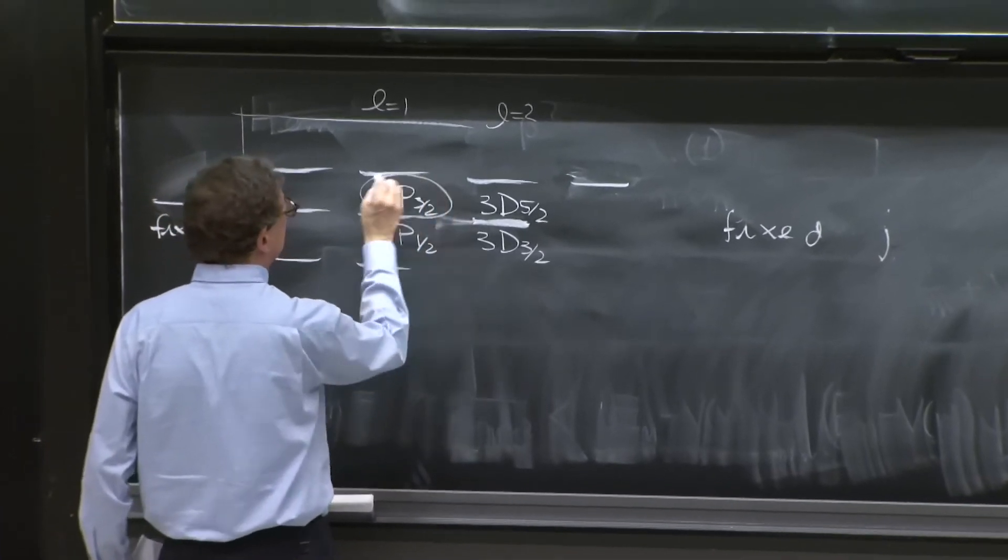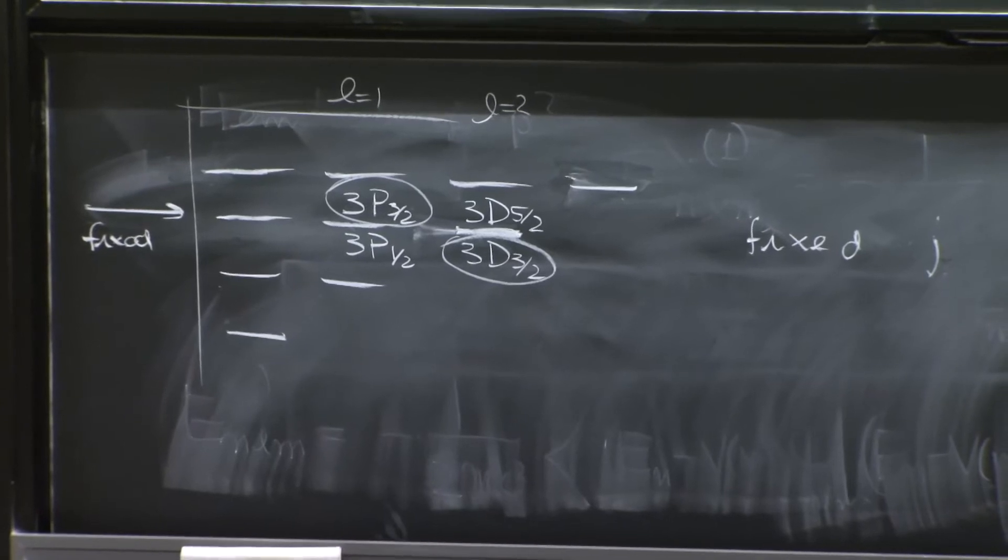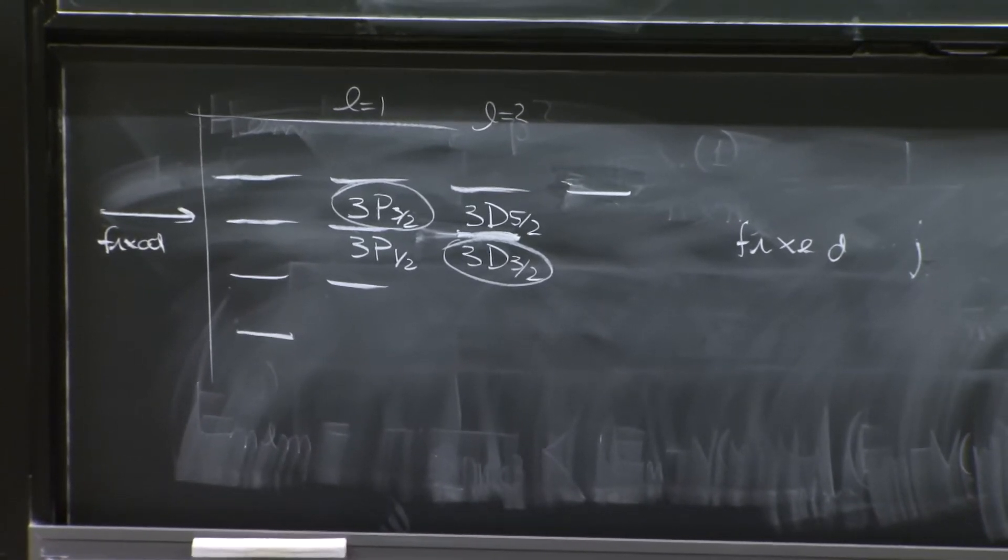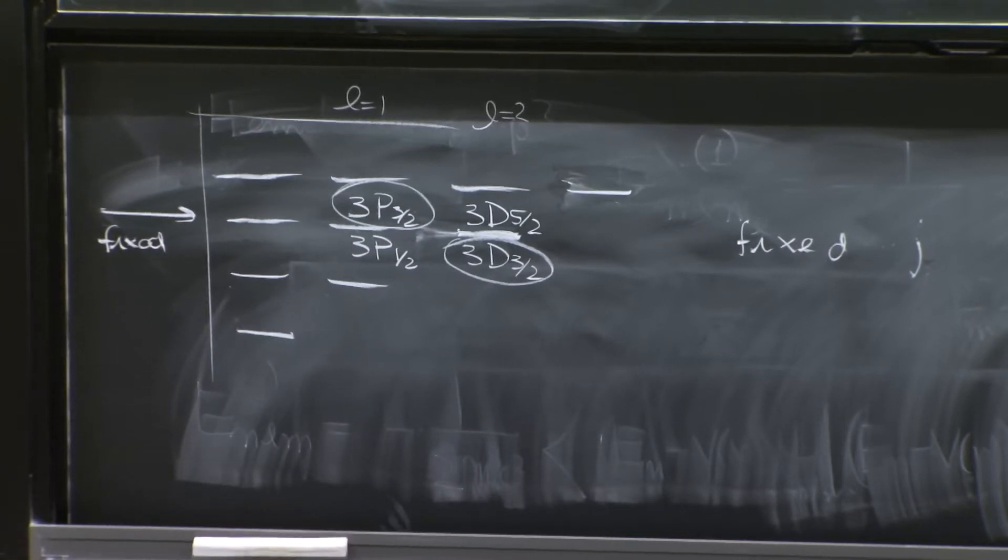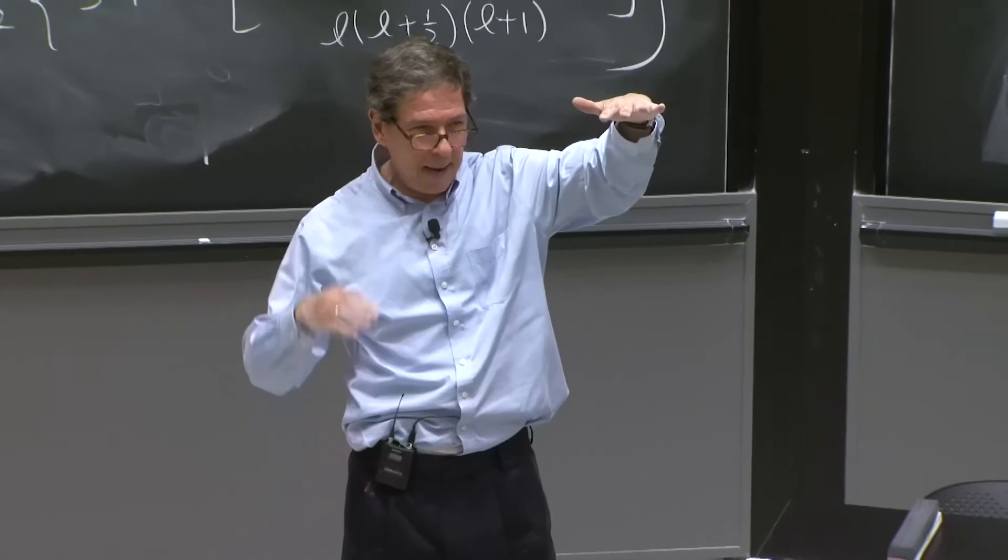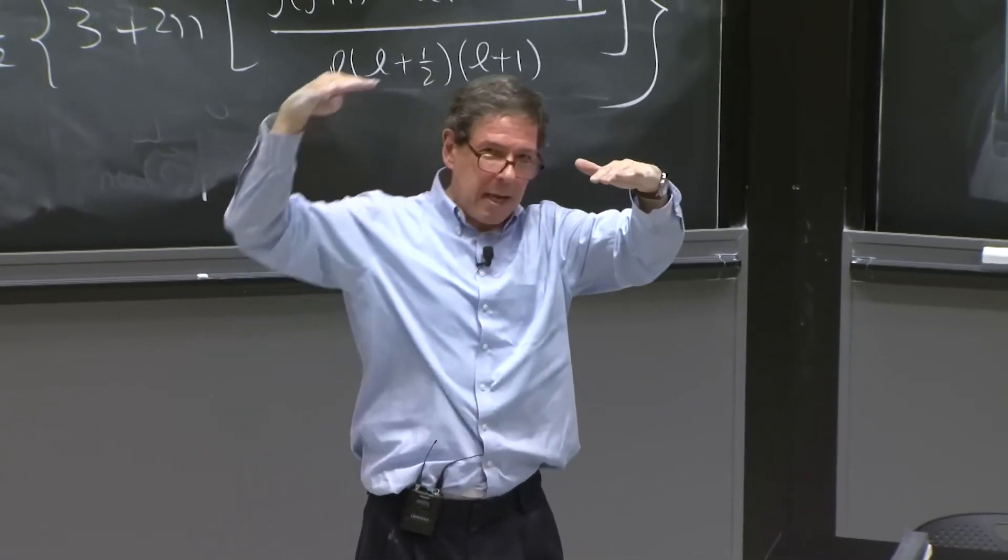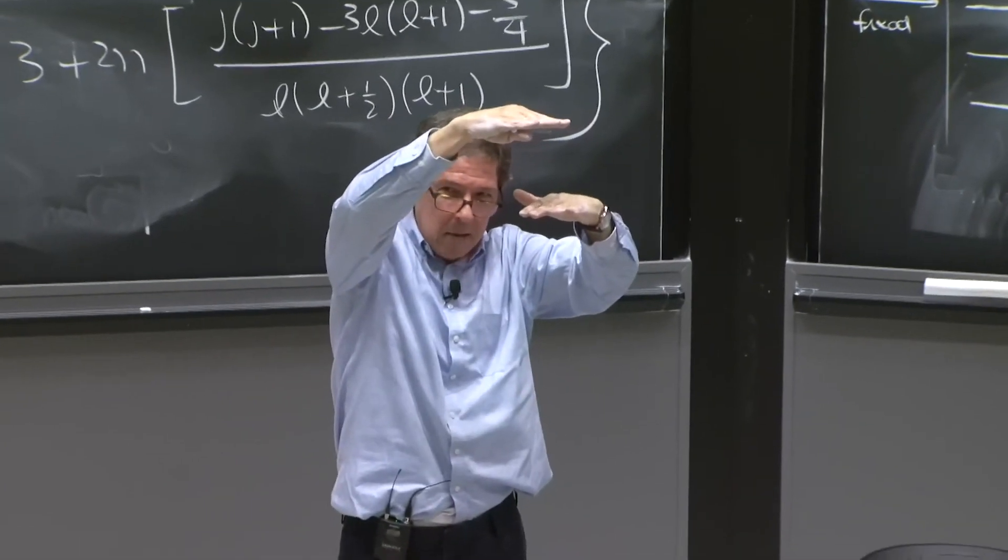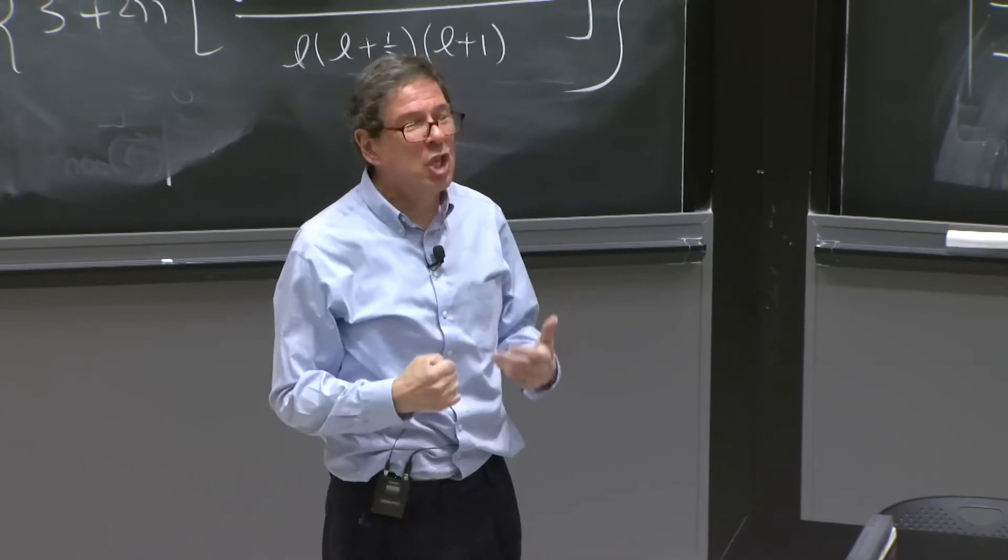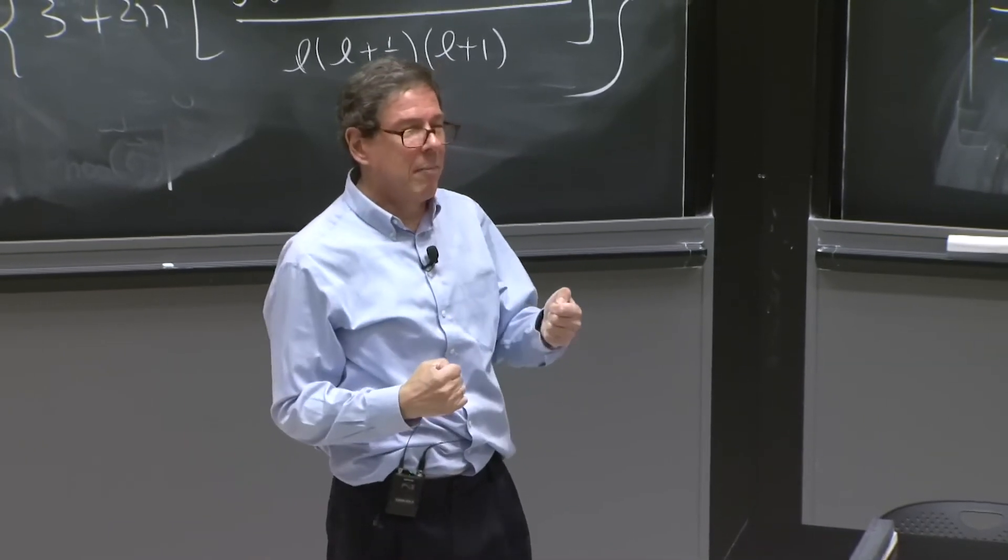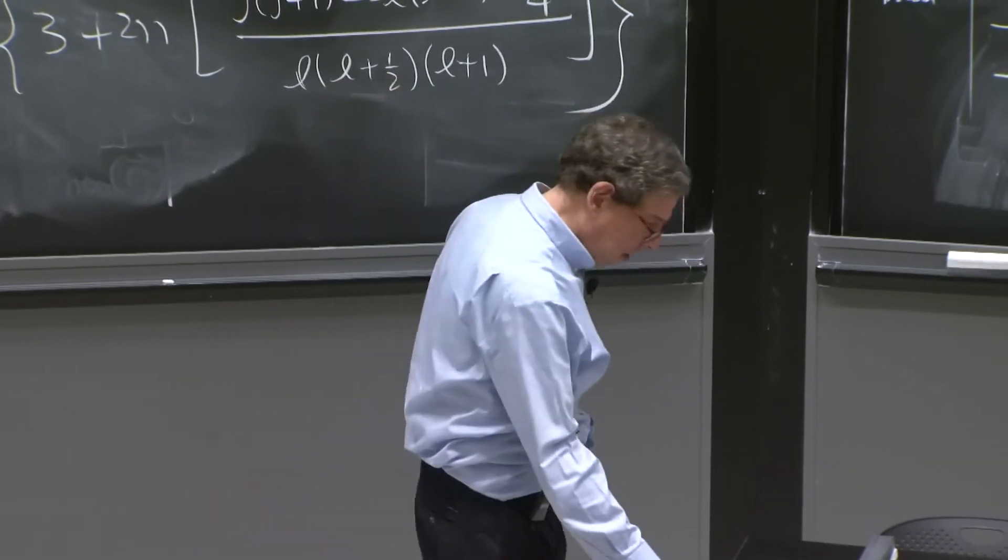So I have here states of fixed j. Two states with the same j. But they come from different l's. Because when you get a total j of some value, it can come from a lower l. l plus 1 half gives you that j. Or it can come from a top l with l minus 1 half giving you that j.